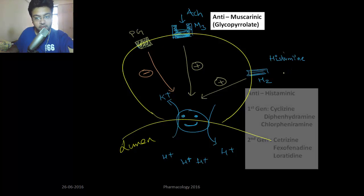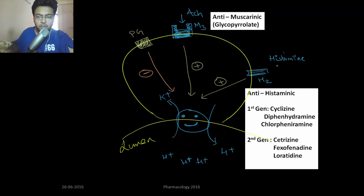Antihistamines, based on whether they cross the blood-brain barrier or not, are divided into first generation and second generation. First generation antihistamines cross the blood-brain barrier, so once they reach the brain they produce a sedating effect.